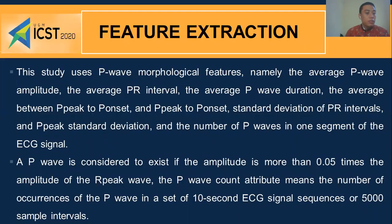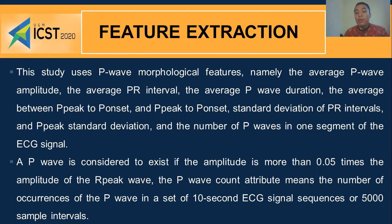Feature extraction: This study uses P-wave morphological features, namely the appropriate P-wave amplitude, the average PR interval, the appropriate P-wave duration, the difference between PP to P-onset, the PP to P-onset standard deviation, the standard deviation of the PR interval, the PP standard deviation, and the number of P-waves in one segment of the ECG signal. A P-wave is considered valid if the amplitude is more than 0.05 times the amplitude of the R-peak wave.